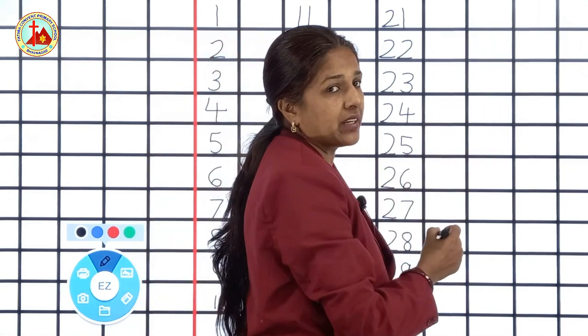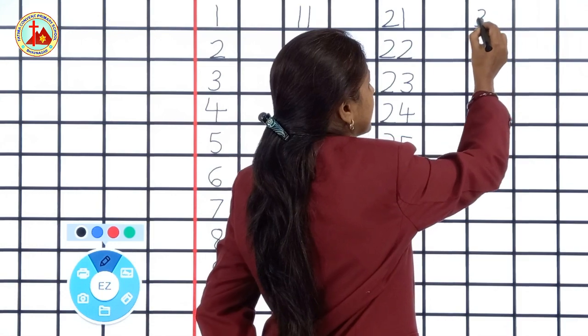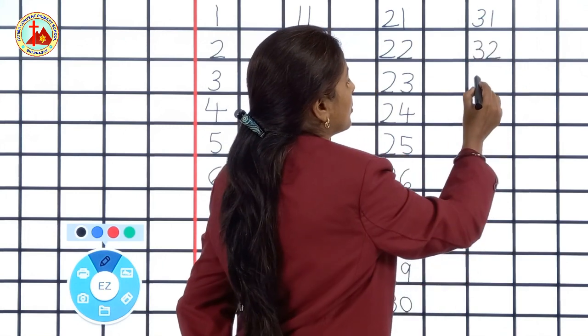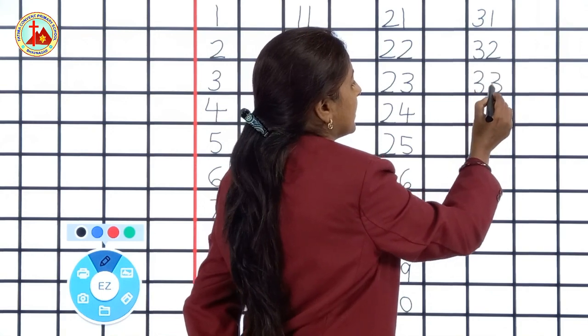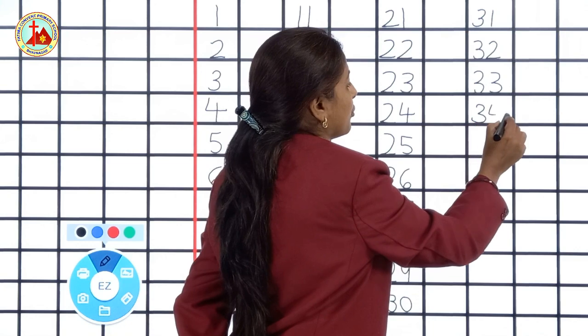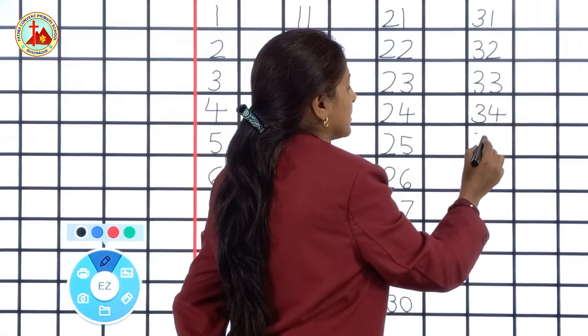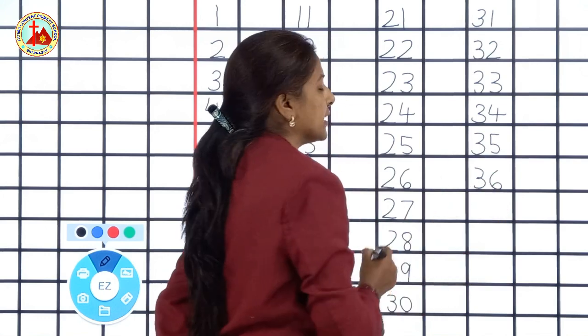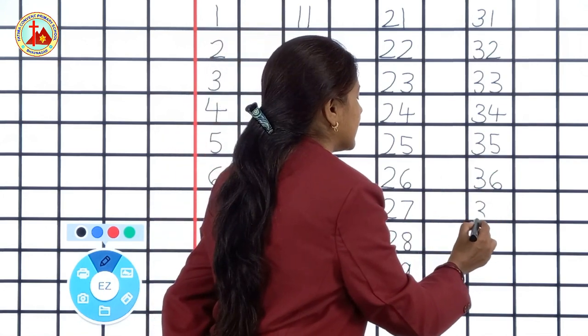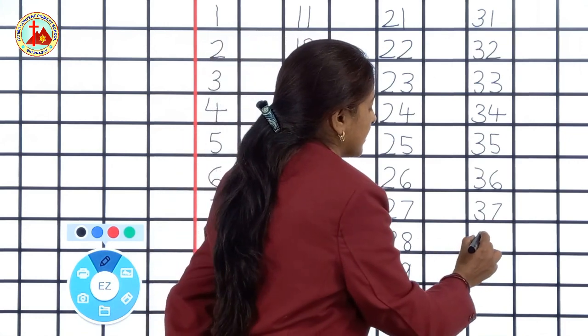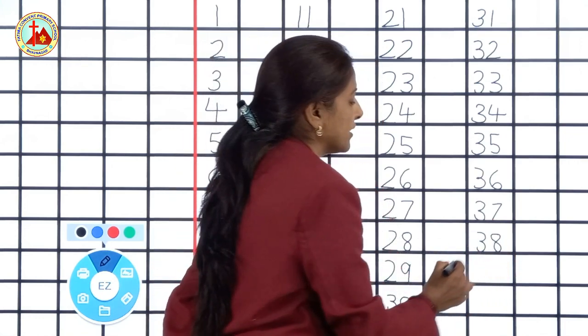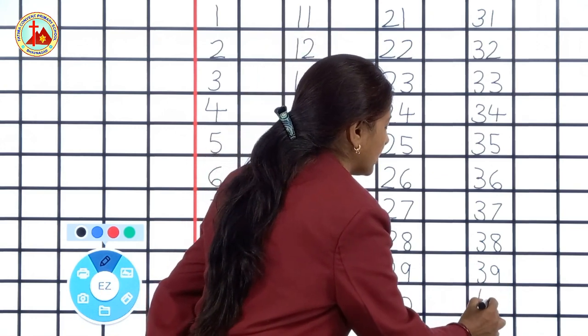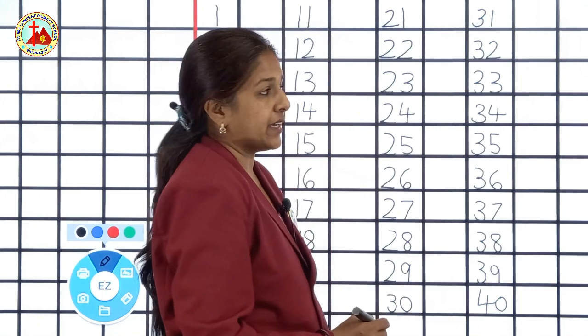After 30, 31, 32, 33, 34, 35, 36. Then 37, 38, 39 and 40.